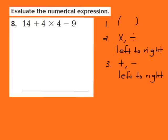Let's take a look at question number 8. Question 8 says to evaluate the numerical expression. They give us 14 plus 4 times 4 minus 9. In order to evaluate this expression correctly, I must follow the order of operations. Let's review those steps again.